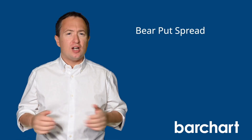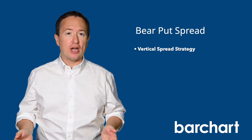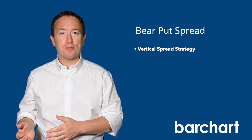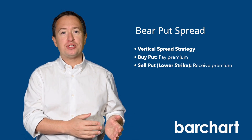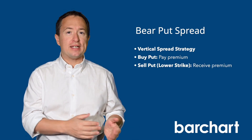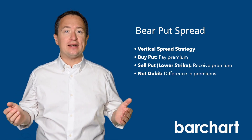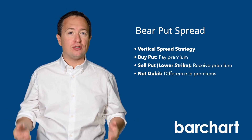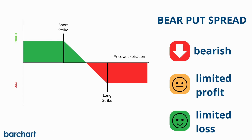A bear put spread, also known as a put-debit spread, is a vertical spread strategy that involves purchasing a put option that is close to or at the money, while simultaneously selling a put option with a lower strike price on the same underlying asset and expiration date. The result is a net debit, or an amount that you have to pay to enter the trade. The goal is for the underlying asset's price to decline below the short put strike price so both options expire in the money.